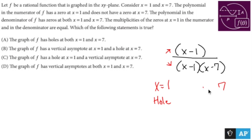So which one of these says hole at 1 and a vertical asymptote at 7? Holes at both? Nope. A vertical asymptote at 1 and a hole at 7? Nope. Graph of f has a hole at 1 and a vertical asymptote at 7? Yes. And the graph of f has a vertical asymptote at both? Nope.